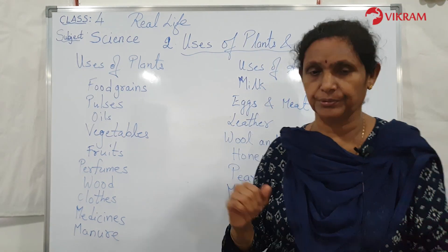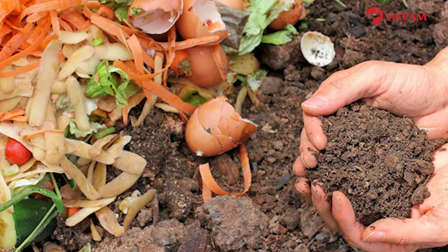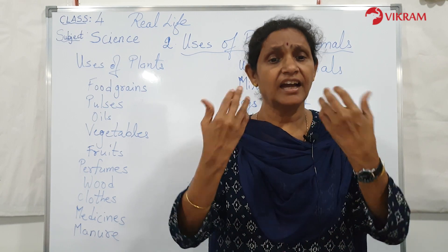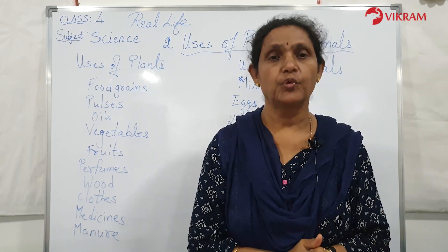Plant waste is also used as manure and is called compost. It helps plants in their growth, making them grow well and strong and produce more flowers and fruits.